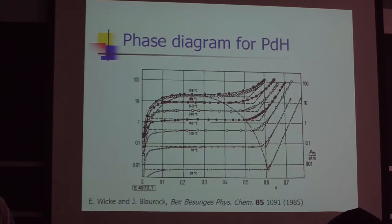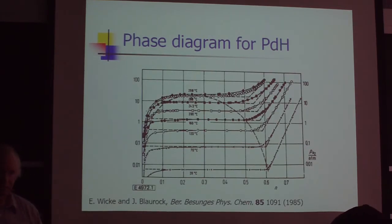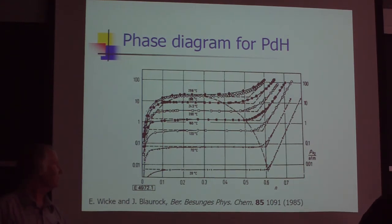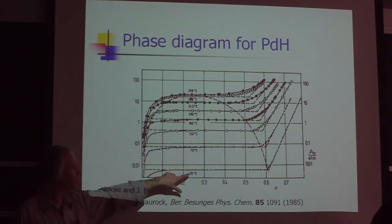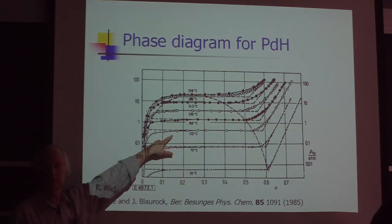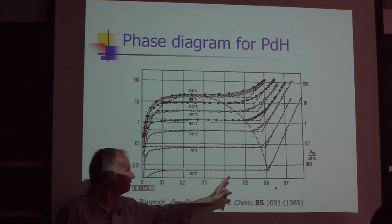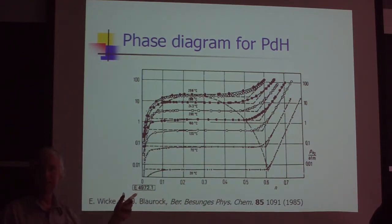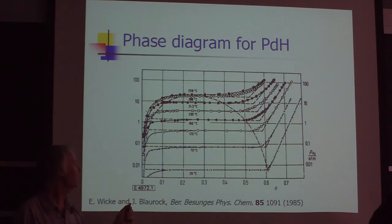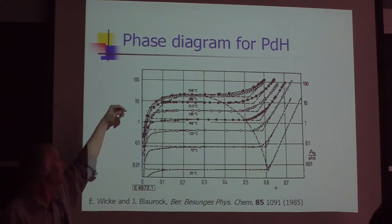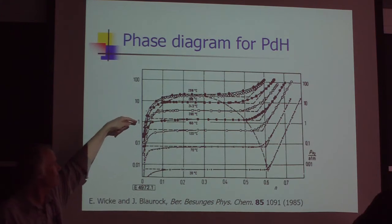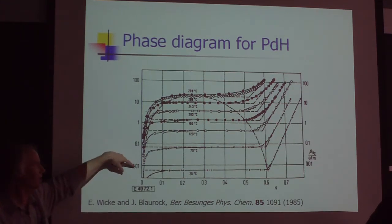Phase diagram. Here's the phase diagram for palladium hydride. So here's curves at different temperatures, 20°C, 70°C, and 120°C. This is loading here. This is number of hydrogen per palladium. And up here is the pressure in atmospheres. So here's one atmosphere, 10 atmospheres, 100 atmospheres.